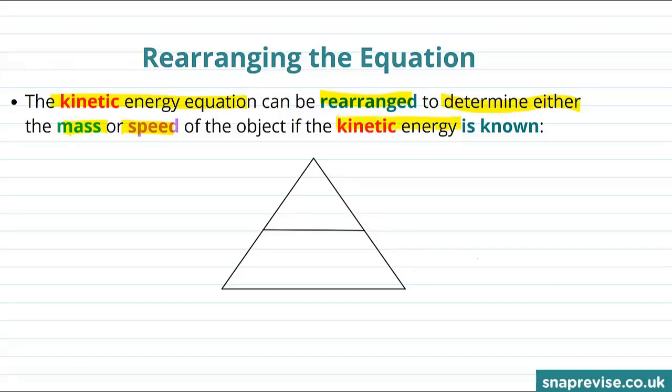Here's how the formula triangle works. We put the kinetic energy at the top because it's the product of all the other things in the equation, and then in the bottom we put the thing that the kinetic energy was equal to, which is a half multiplied by the mass multiplied by the speed squared.